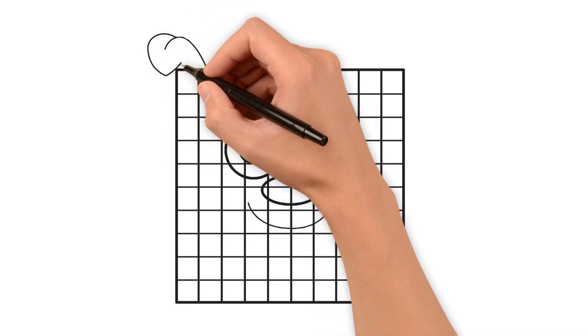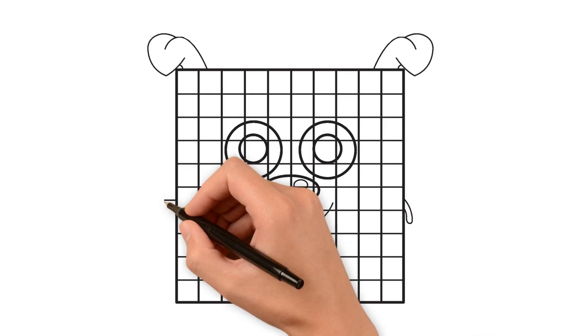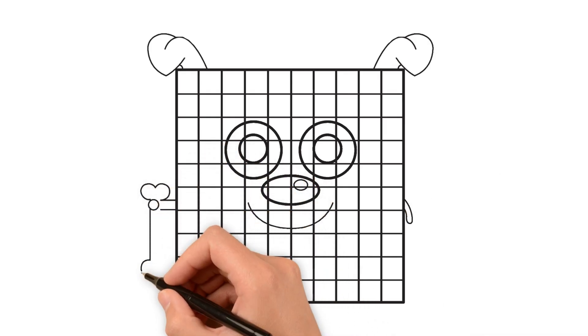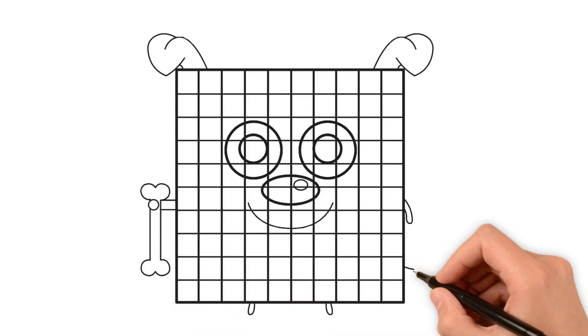Add his two floppy dog ears on top. Then, draw his arms. One holding a little bone toy on the left and the other arm on the right. At the bottom, draw two short legs. On the right side, add a wagging tail.